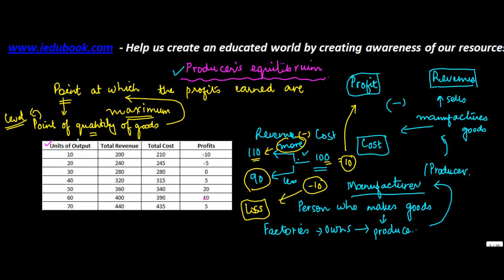Now let us see this particular table. The units of output which the producer has made are 10, 20, 30, 40, 50, 60, and 70. When he makes 10 units of production he gets a revenue of 200. The total cost is 210, and the profit or loss — the negative number here represents a loss. A loss is incurred when revenue minus cost is a negative number, so here if you subtract 210 from 200 you get minus 10.